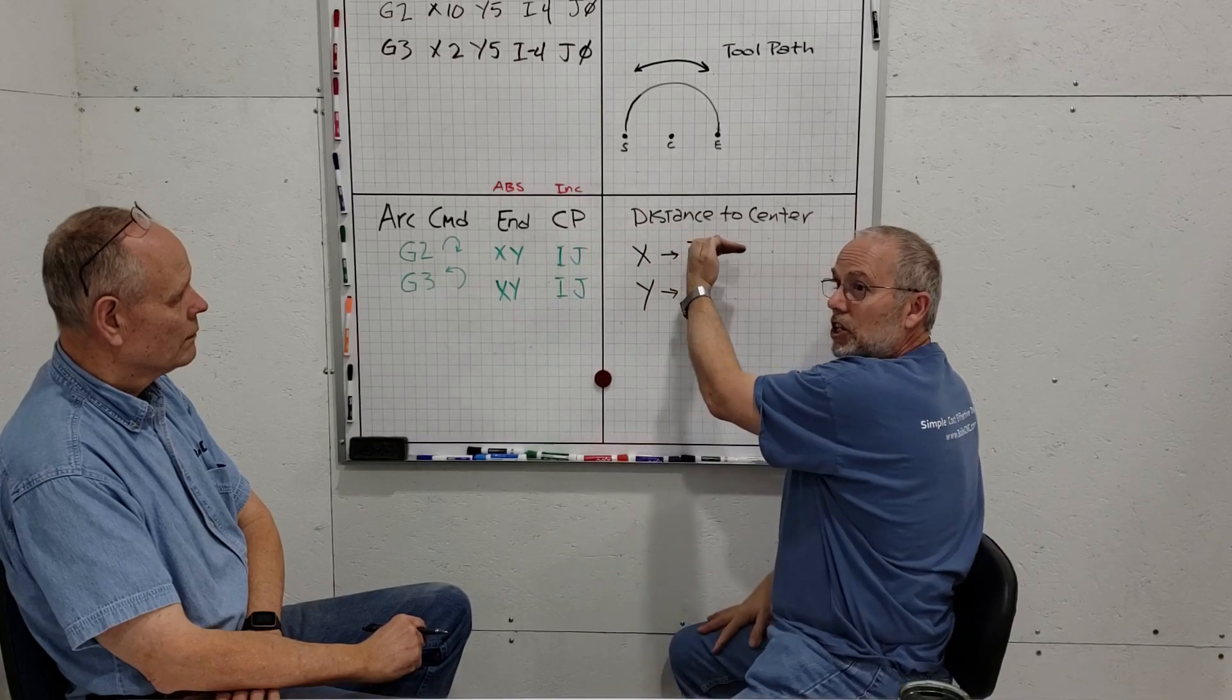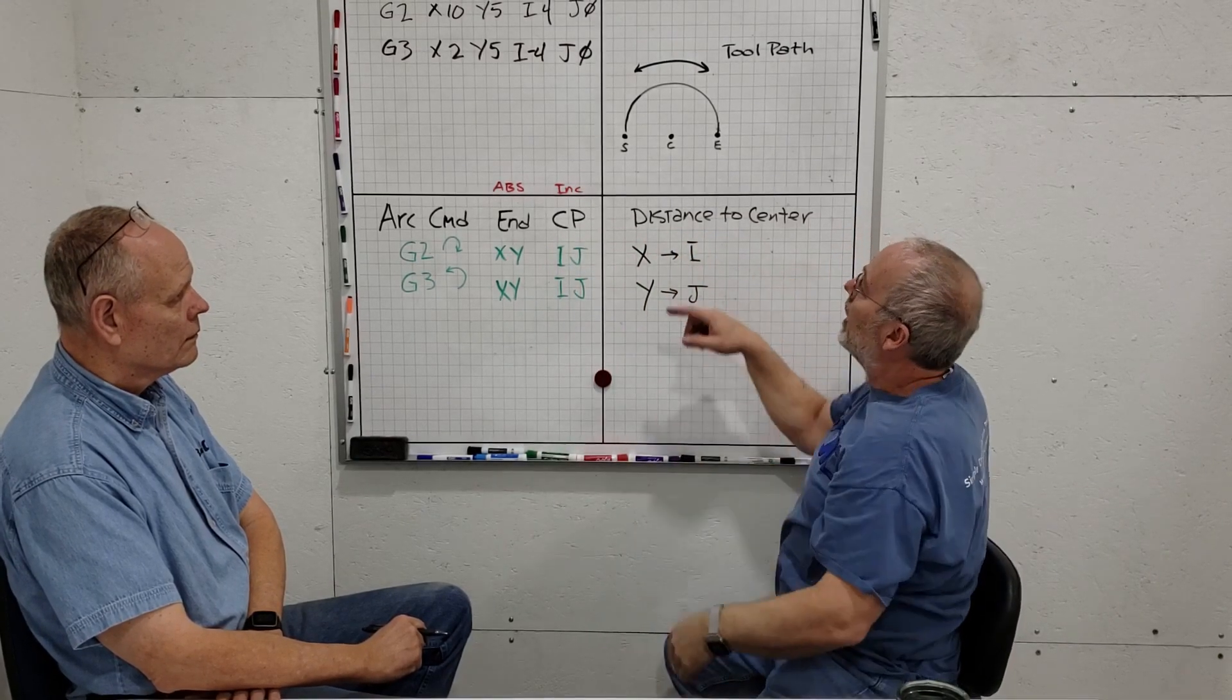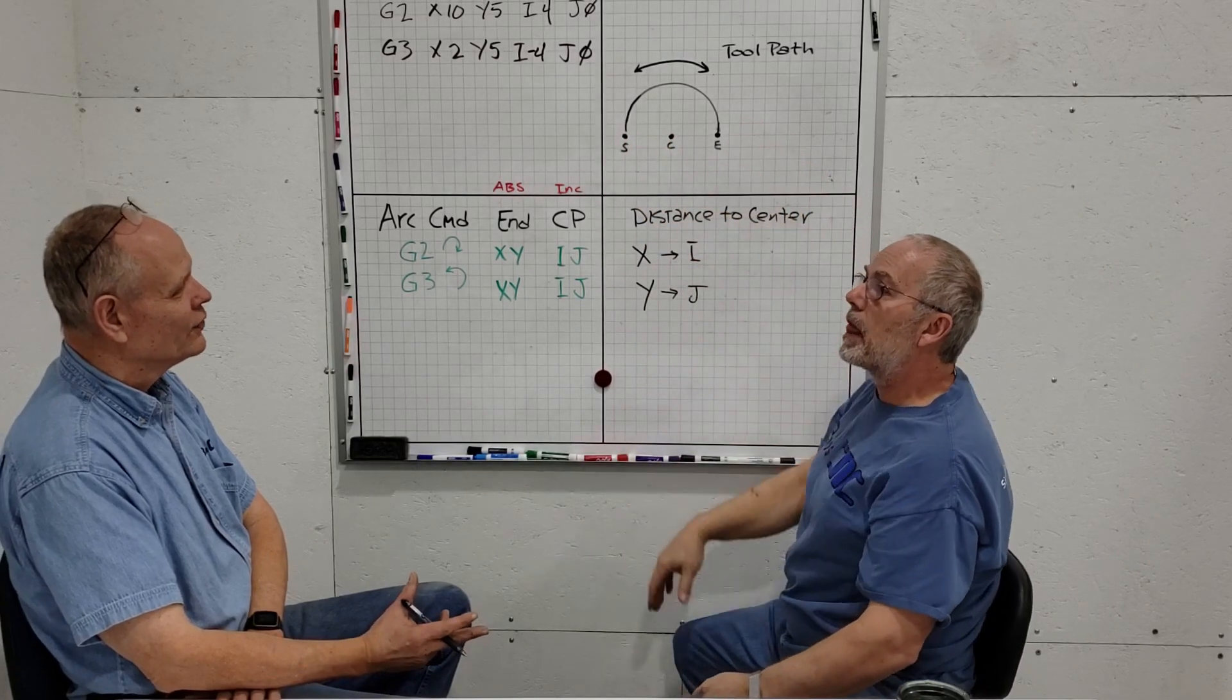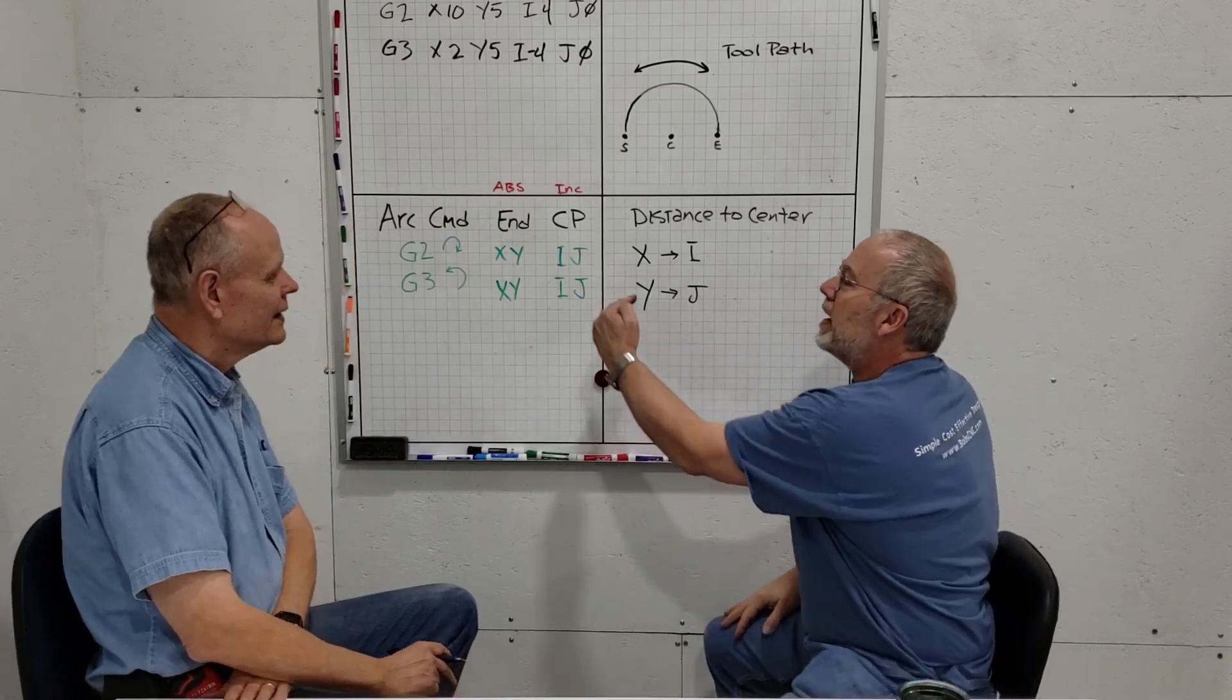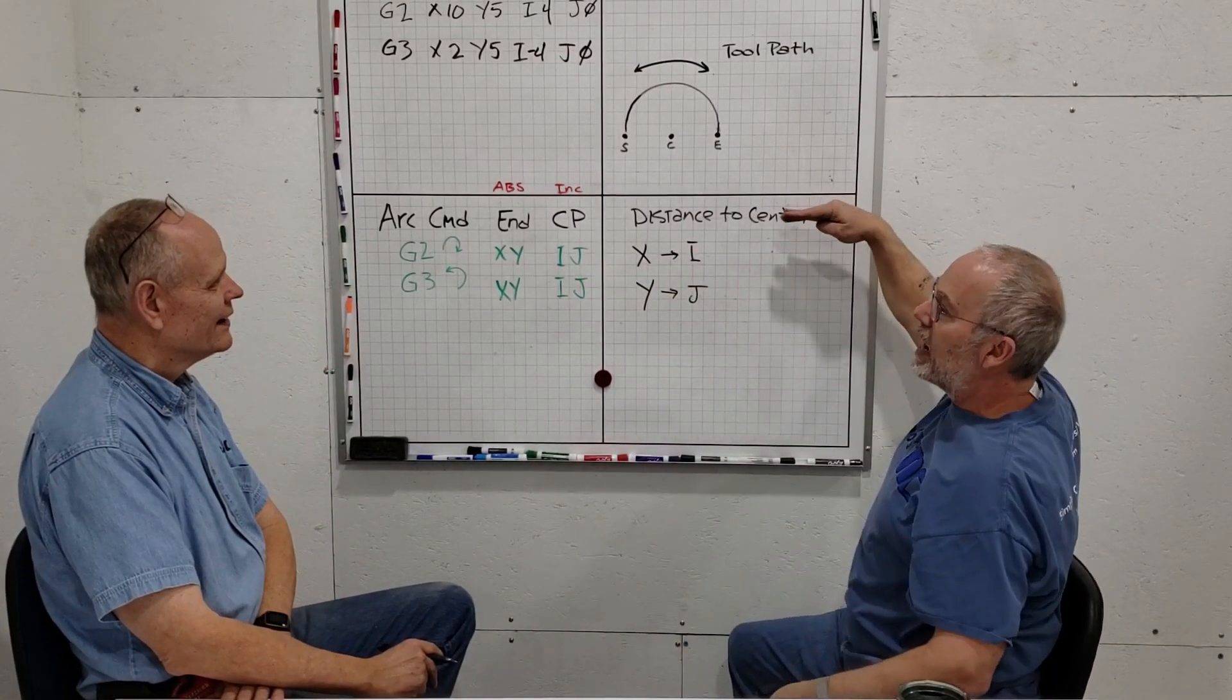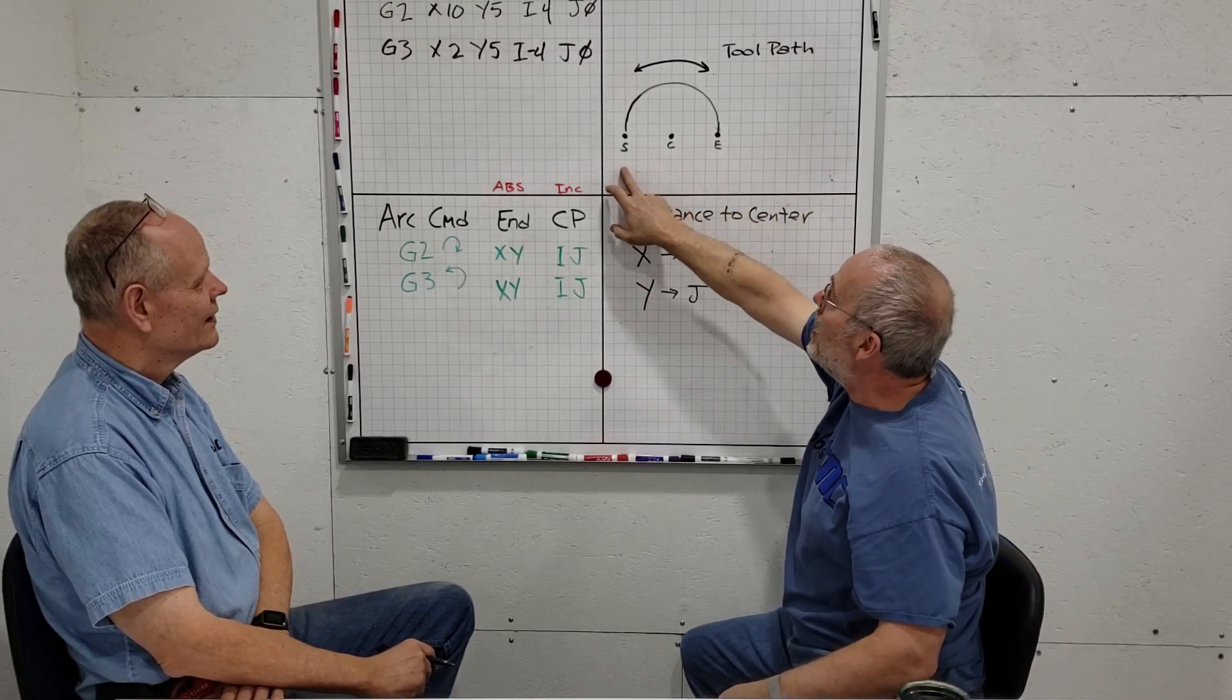I don't want to make this more complicated, but it just is. Remember, we are in absolute values in our XY coordinate system. Here's our origin—it's absolute. Our center point, however, is going to be defined incrementally.